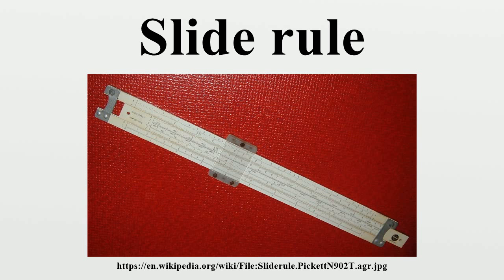Scales may be grouped in decades, which are numbers ranging from 1 to 10. Thus single-decade scales C and D range from 1 to 10 across the entire width of the slide rule, while double-decade scales A and B range from 1 to 100 over the width of the slide rule. In general, mathematical calculations are performed by aligning a mark on the sliding central strip with a mark on one of the fixed strips, and then observing the relative positions of other marks on the strips.